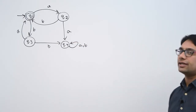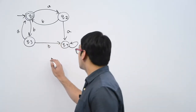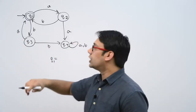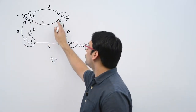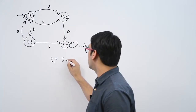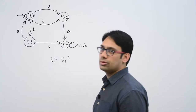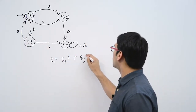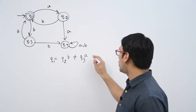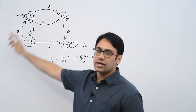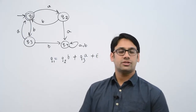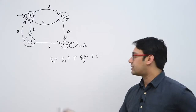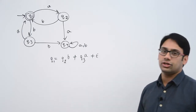Secondly, for every state you have to write an expression. For Q1, how can you reach Q1? You can reach Q1 if you get B from Q2, or if you get A from Q3, or epsilon — meaning you are at the start state. So you can reach Q1 by seeing B at Q2, or A at Q3, or epsilon.